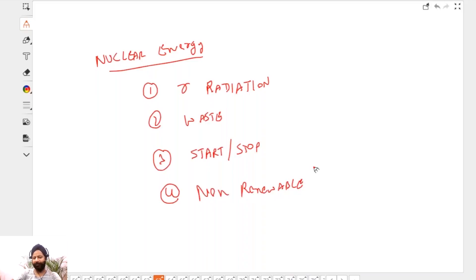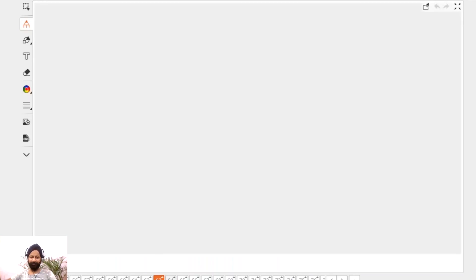Plus, this is a non-renewable source of energy. Uranium-235, it's over. It's over. There is a limited supply that you have. Is it clear now? It's not preferred, even though it gives us so much energy. It's not a preferred source of energy.